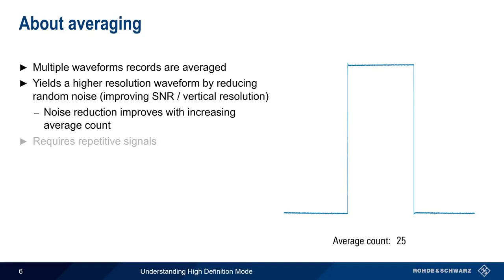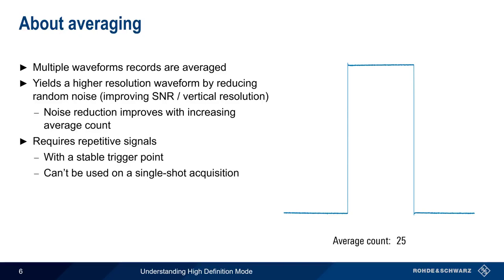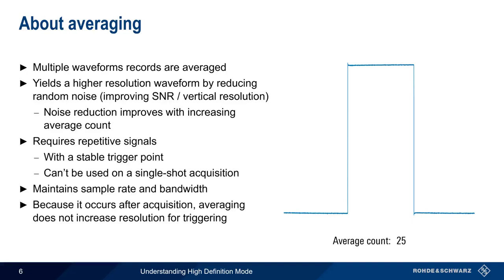Averaging does, however, require a repetitive signal with a stable trigger point. Another limitation of averaging is that it can't be used on a single-shot acquisition. But unlike the next two methods we'll discuss, averaging does not reduce the scope's bandwidth or the scope's sample rate. Note also that the scope's triggering system can't take advantage of the noise reduction from averaging, because averaging only occurs after acquisition.